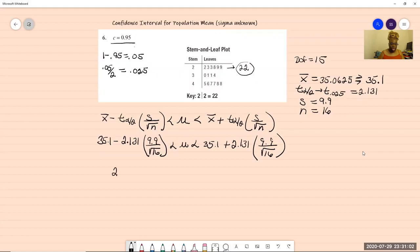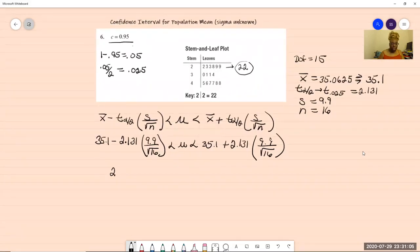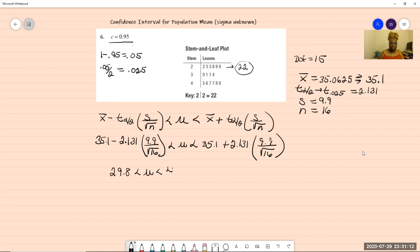So our answer is 29.8 is less than mu is less than 40.4. And this is your answer written properly and showing that you know what letter should go in the middle. That is the mean. Do not write it in the calculator, at least not for my class, maybe for your instructor it'll be fine, but do not copy it out of the calculator as just 29.8 comma 40.4.